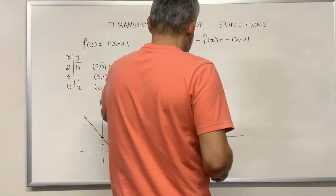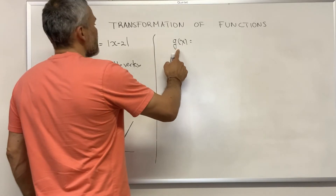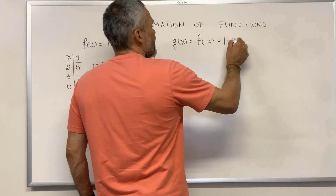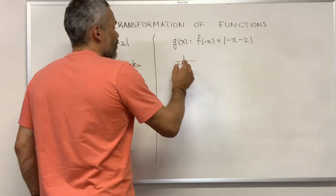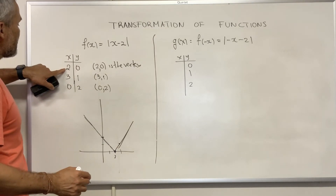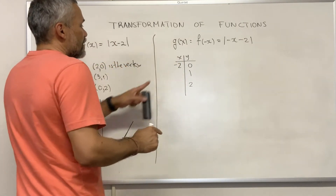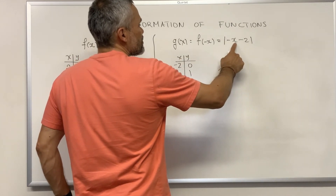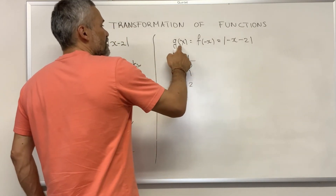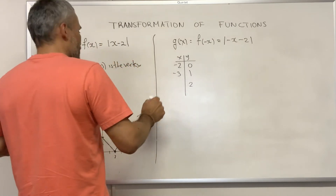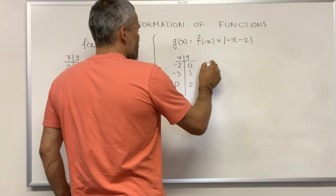Let's consider another example. Let's take g of x equal to f of negative x. In this case, that is the absolute value of negative x minus 2. We notice that we can achieve the same y-values by changing the sign of the x-values. For example, if we input negative 2, then g of negative 2 is the absolute value of negative negative 2 minus 2, which is 2 minus 2, equals 0. If we input negative 3, g of negative 3 gives us 1, and if we input 0 we get 2.